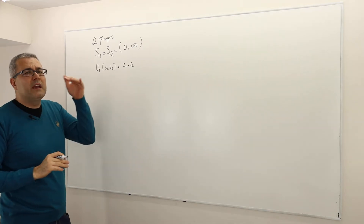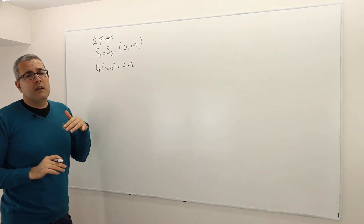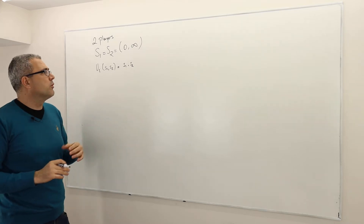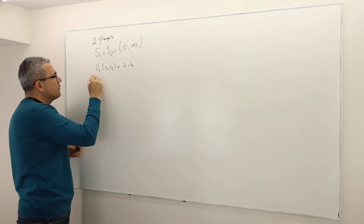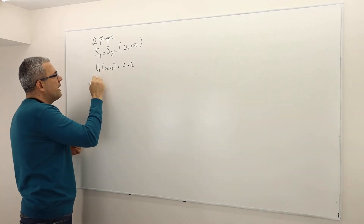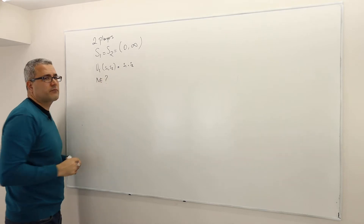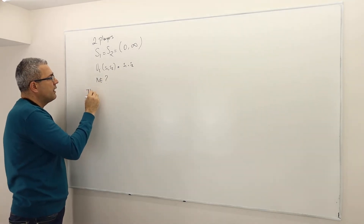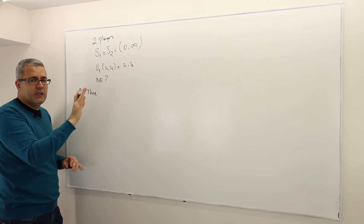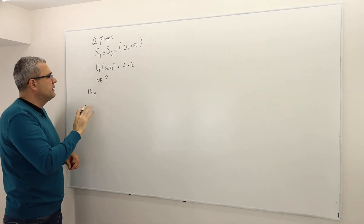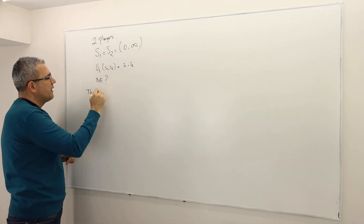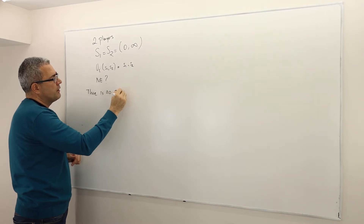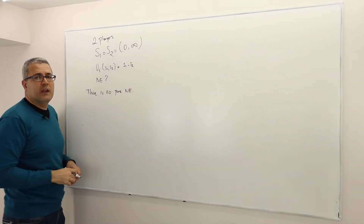So the bigger number they pick, the more payoffs they will get. The question is: what is or are the Nash equilibria of this game? Well, the answer is in pure strategies — I don't talk about mixed strategies — there is no pure strategy Nash equilibrium of this game.